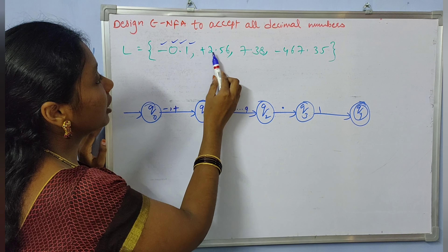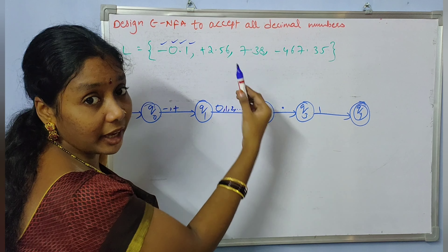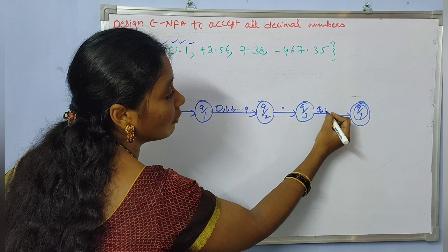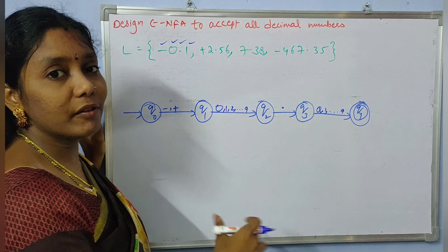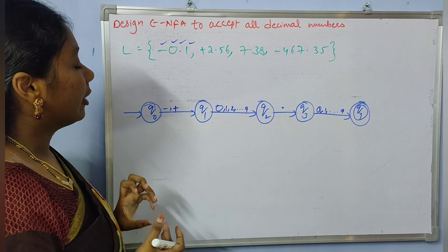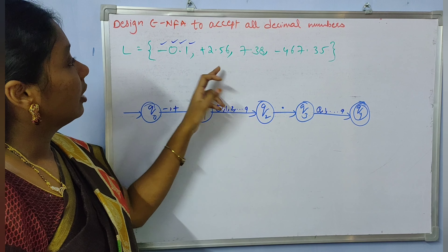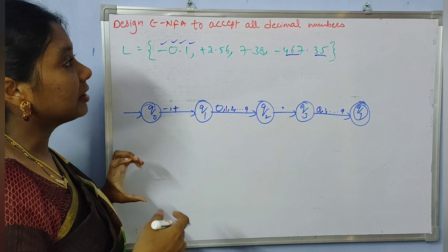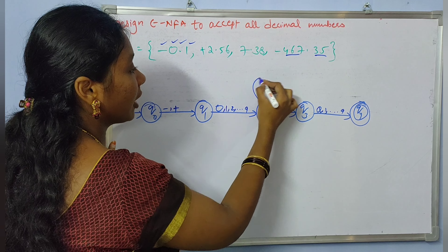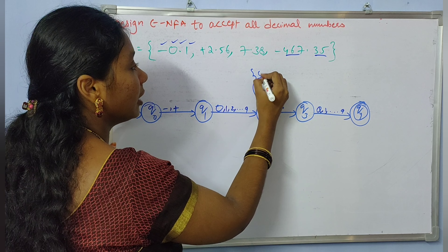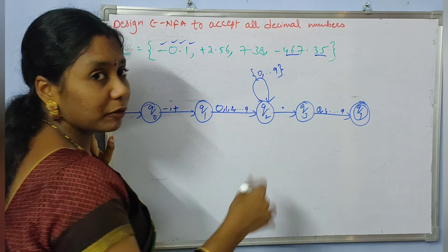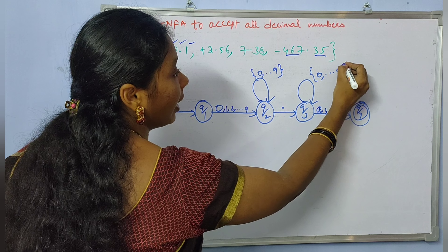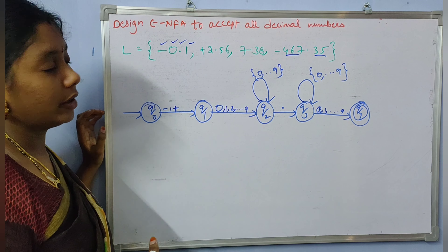After the decimal point you may have digits like 5, 8, 3, and so on — any kind of digit from 0 to 9. And not only one symbol: before and after the decimal point you may have more than one symbol. So before the decimal point you can add a loop and take digits from 0 to 9 any number of times. Similarly, after the decimal point you can add a loop and take digits from 0 to 9 any number of times.